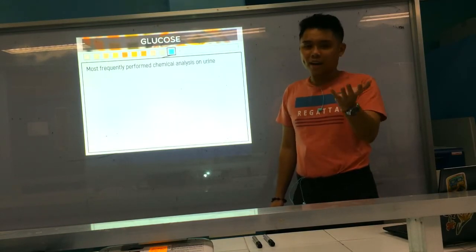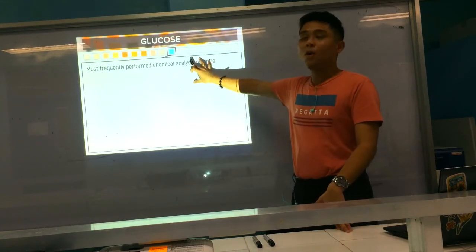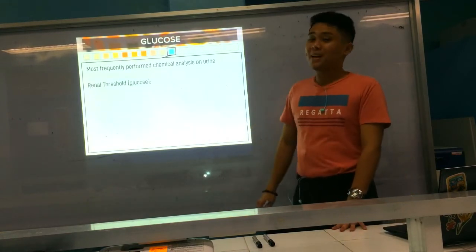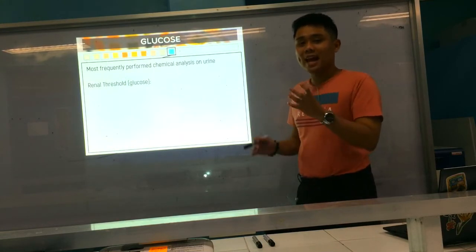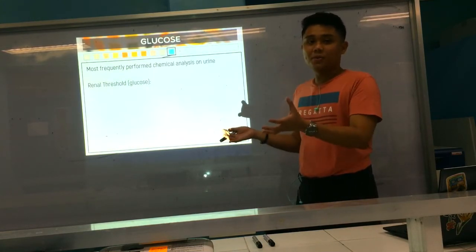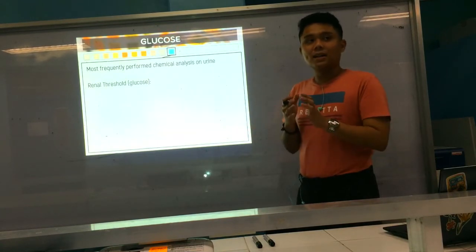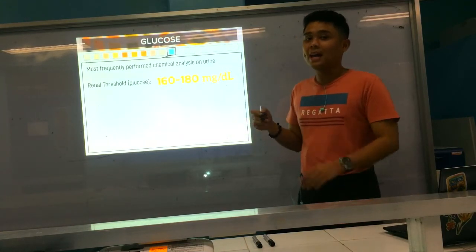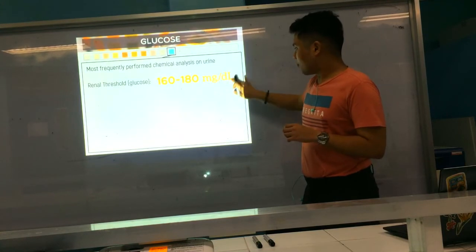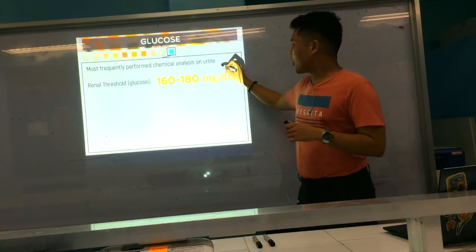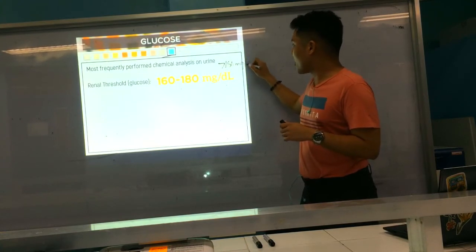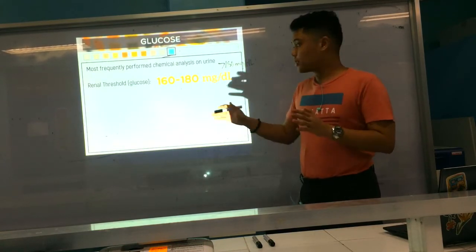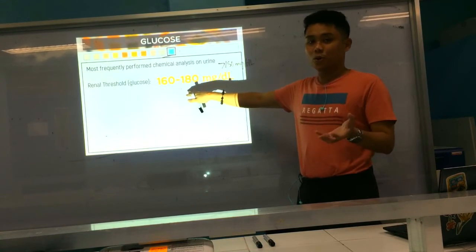Glucose is frequently tested due to the prevalence of diabetes and kidney-related disorders. We have what we call the renal threshold of glucose. The renal threshold is the maximum amount of glucose that can be reabsorbed back by the kidneys. For glucose, it's only about 160 to 180 mg/dL. If your glucose level is greater than 180 mg/dL, the kidneys can no longer reabsorb it — it reaches its renal threshold and glucose is released into the urine.